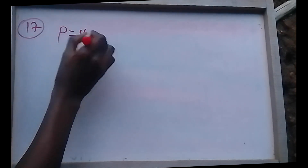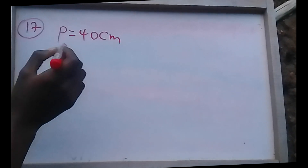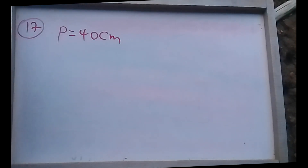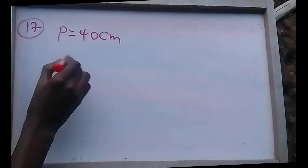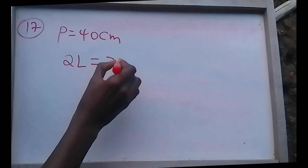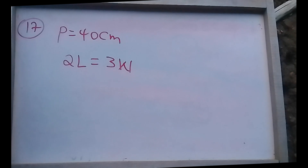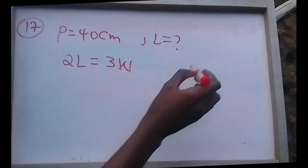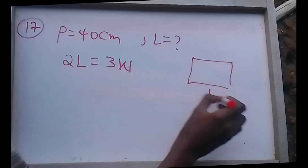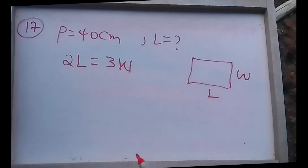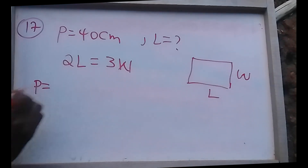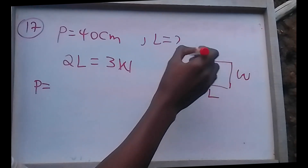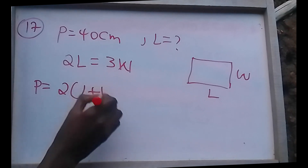The perimeter of a rectangle is 40 centimeters, and twice its length is 3 times its width. So 2L equals 3W. The perimeter formula is 2 times (L plus W) equals 40 cm. We substitute: since 2L equals 3W, then L equals (3/2)W. So perimeter: 2 times ((3/2)W plus W) equals 2 times (5/2)W equals 5W equals 40.